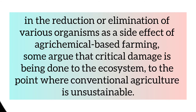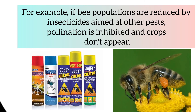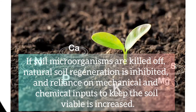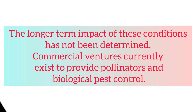In the reduction or elimination of various organisms as a side effect of agri-chemical-based farming, some argue that critical damage is being done to the ecosystem, to the point where conventional agriculture is unsustainable. For example, if bee populations are reduced by insecticides aimed at other pests, pollination is inhibited and crops don't appear. If soil microorganisms are killed off, natural soil regeneration is inhibited, and reliance on mechanical and chemical inputs to keep the soil viable is increased. The longer-term impact of these conditions has not been determined. Commercial ventures currently exist to provide pollinators and biological pest control.